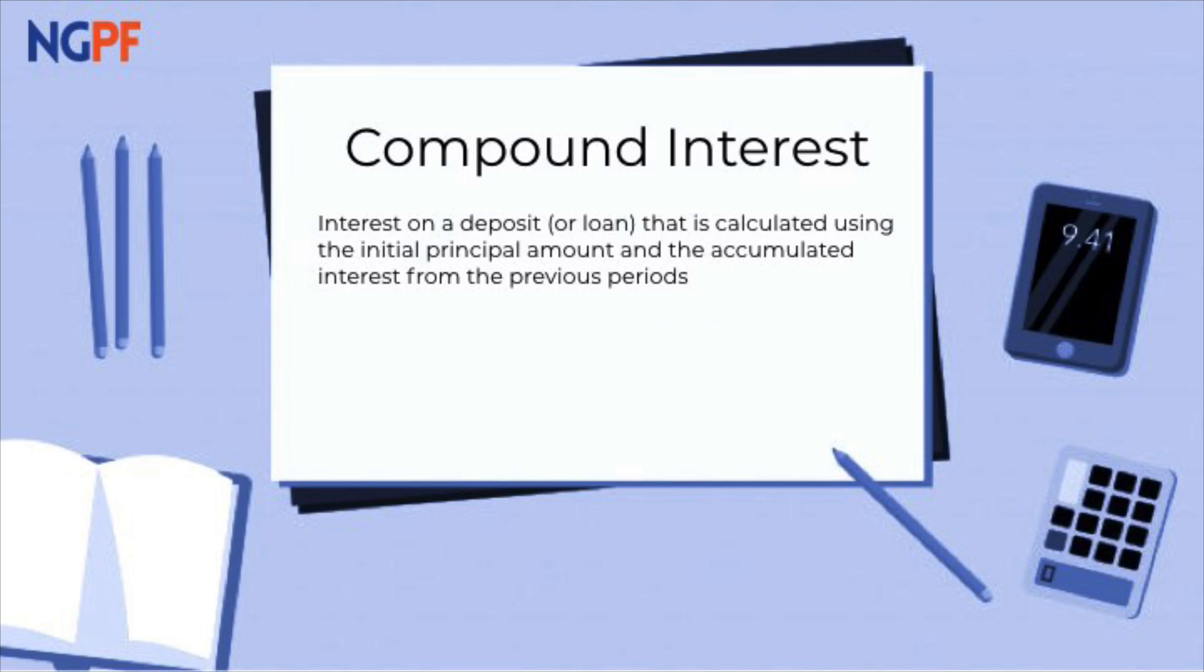Let's go over the compound interest formula and what each variable stands for. We have A equals P times 1 plus R divided by N, all raised to the N times T power.